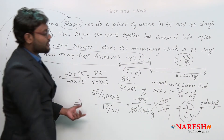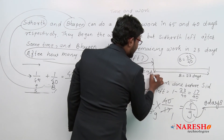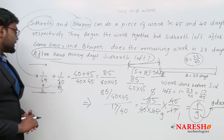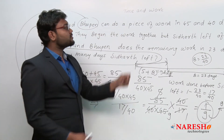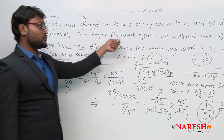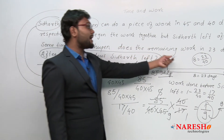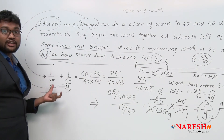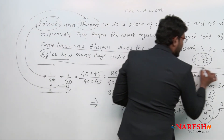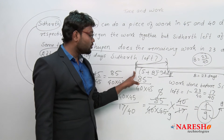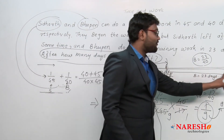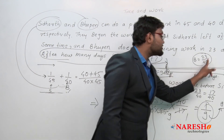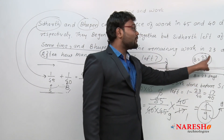Let me repeat the method once more. Siddhartha and Bhupen can do a piece of work in 45 and 40 days respectively. They begin together but Siddhartha left after some time, and Bhupen does the remaining work in 23 days. From the work diagram, after Siddhartha left, Bhupen worked alone for 23 days. Bhupen's one day's work is 1/40, so his 23 days' work is 23/40.